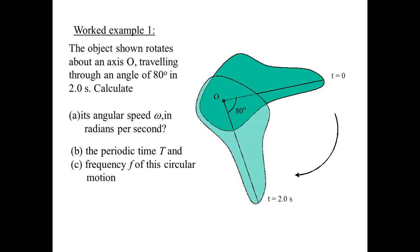Calculate: A, its angular speed omega in radians per second; B, the period time T; and C, frequency f of this circular motion.